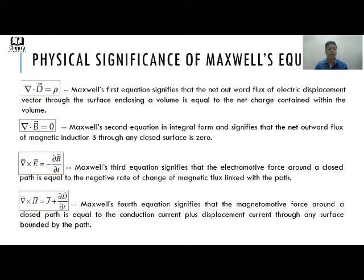The second Maxwell equation, which is Gauss's law of magnetostatics, indicates that the net outward flux of magnetic induction B through any closed surface is zero. The third Maxwell's equation is Faraday's law of electromagnetic induction — it signifies that the electromotive force around a closed path is equal to the negative rate of change of magnetic flux linked with the path.